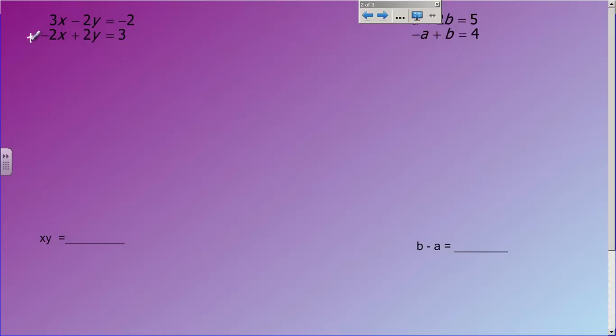If I add this set of equations together, 3x plus negative 2x is just going to be 1x, but if I add my y's, negative 2y plus 2y, they eliminate, hence the word elimination. I just eliminated the y's.